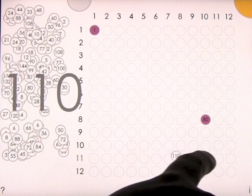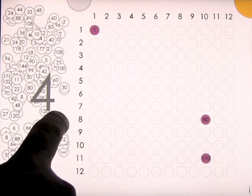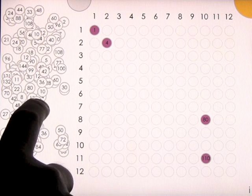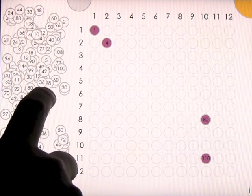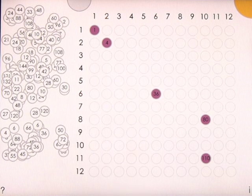110 would be 11 times 10. I'm doing really easy ones here. 2 times 2 would be 4. Let's see, 6 times 6 would be 36 and so on.